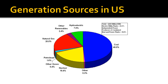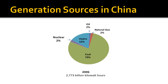49% of electricity generation in the United States comes from coal, 20% from natural gas, and 19.4% from nuclear sources. Renewable sources such as hydroelectricity only make up 9.4%. China's electricity generation is also similar to that of the United States — it is heavily reliant on coal, making up 79% of its power production.